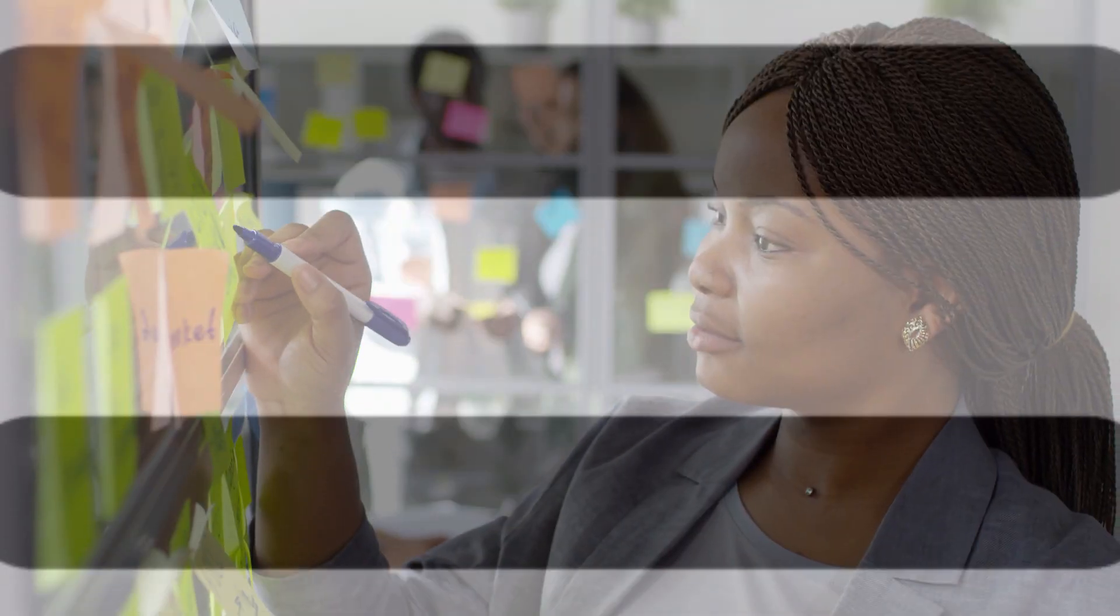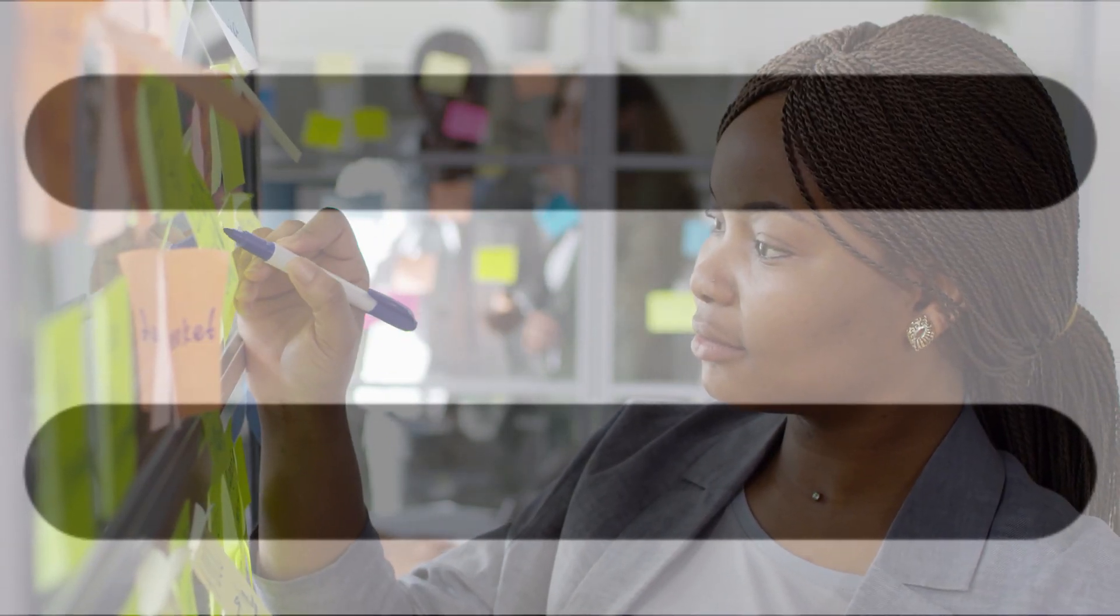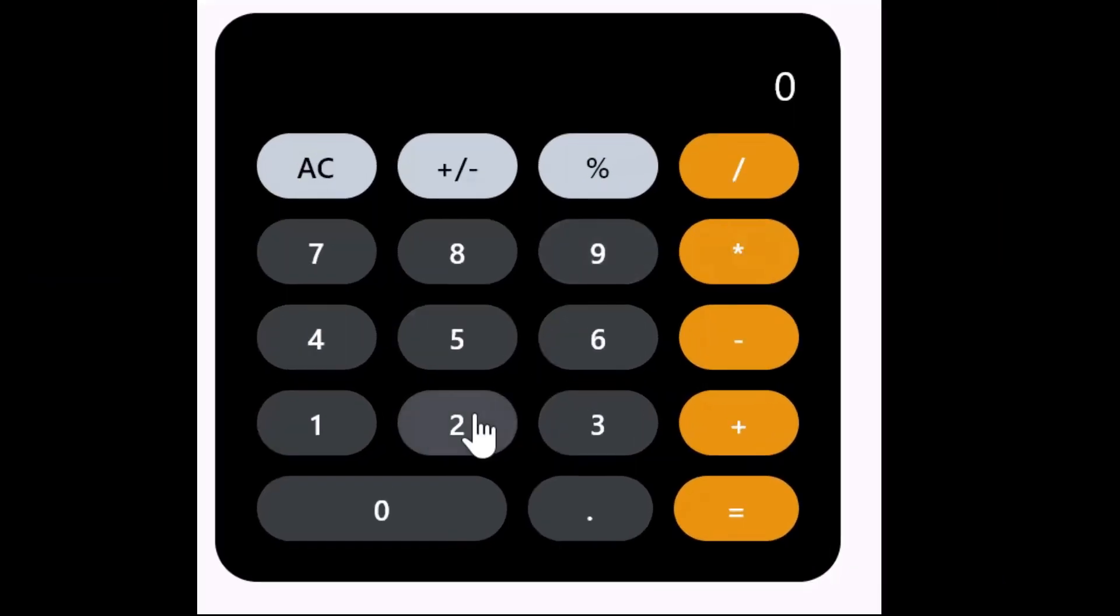In conclusion, the invention of the equal sign by Robert Record was a significant moment in the history of mathematics. It provided a simple and elegant way to express the concept of equality and quickly became one of the most widely recognized symbols in the world.